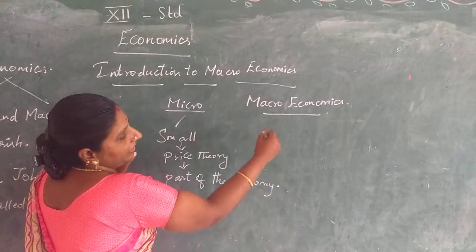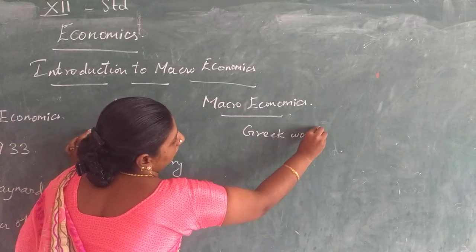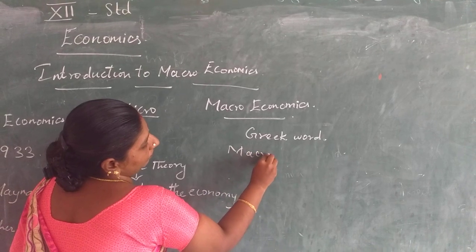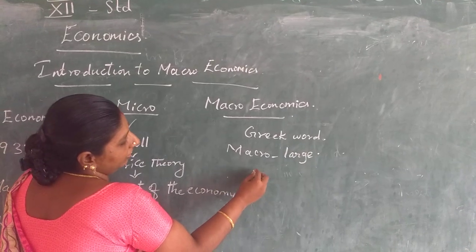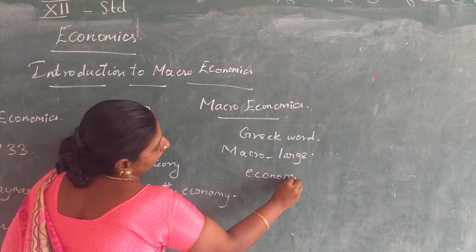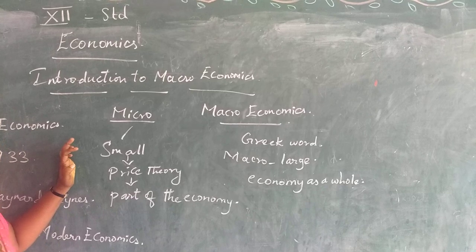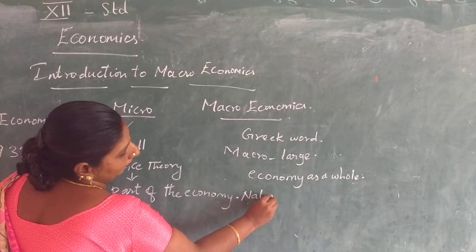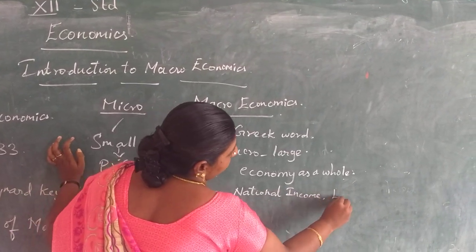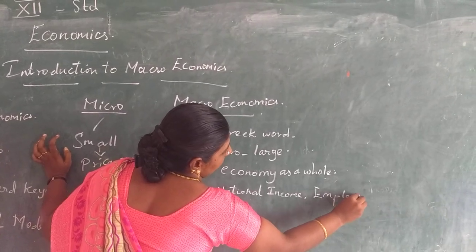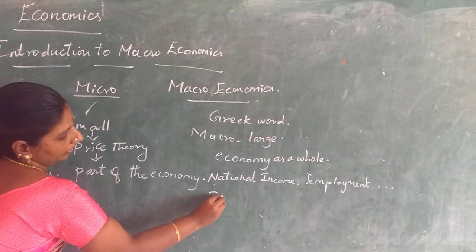But macroeconomics is derived from the Greek word — macro means large. It deals with the economy as a whole. It deals with the aggregates of national income, employment, and so on. So it is also called income theory.